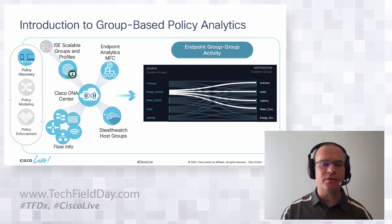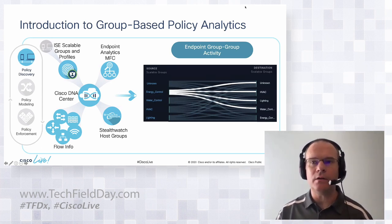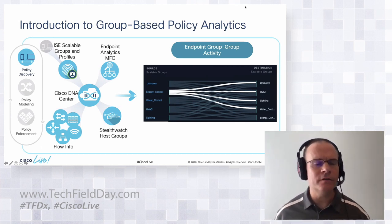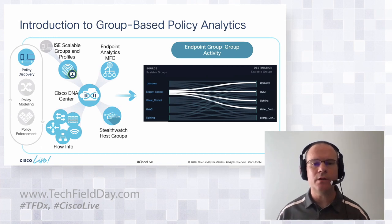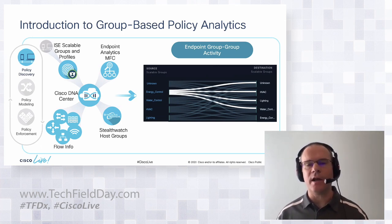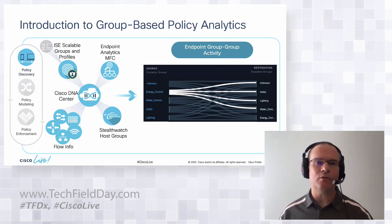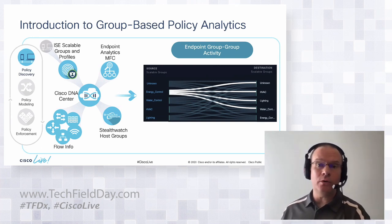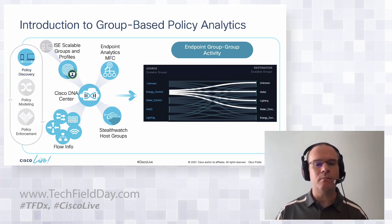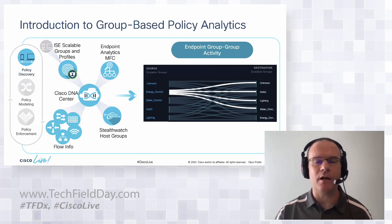Once we have that, we want to visualize what can and can't be seen in the environment. This is an example using a Sankey chart — a very popular visualization tool — where we can see that energy control is speaking to HVAC, lighting, and water controls. That sounds like a viable set of groupings for a functional environment. But you also see it has some unknown communication. That's an example where we want to move not only endpoints from unknown to known classifications, but also move network traffic profiles from an unknown classification into a known one. That's really what group-based policy analytics is all about.